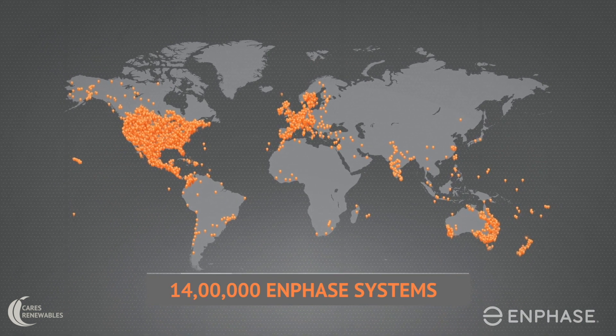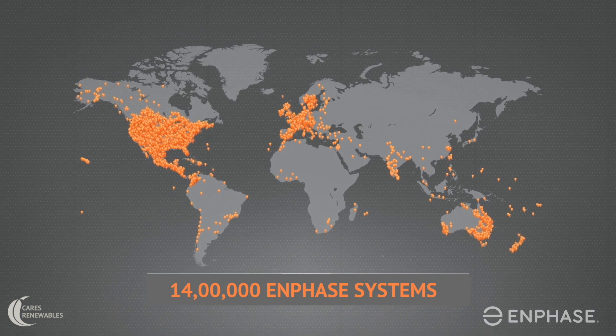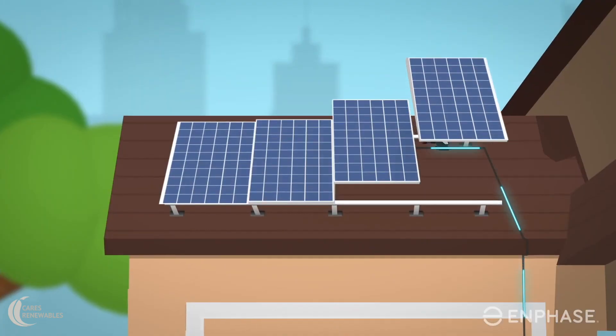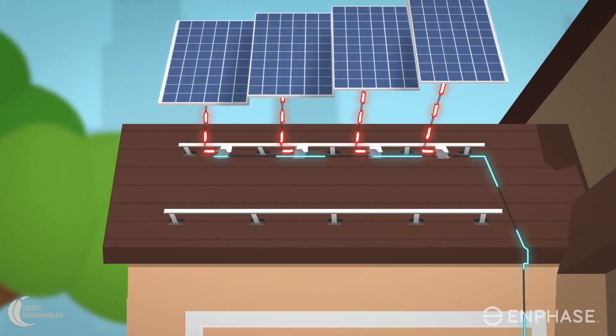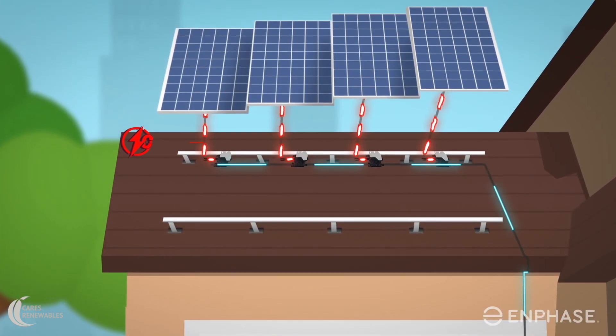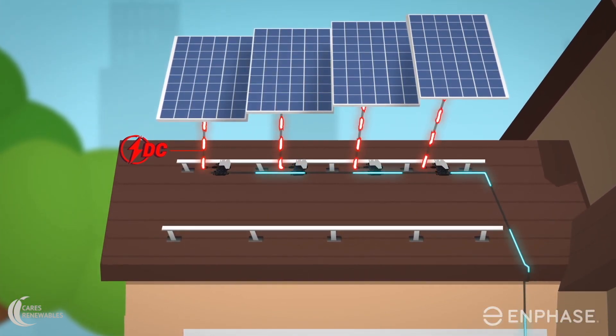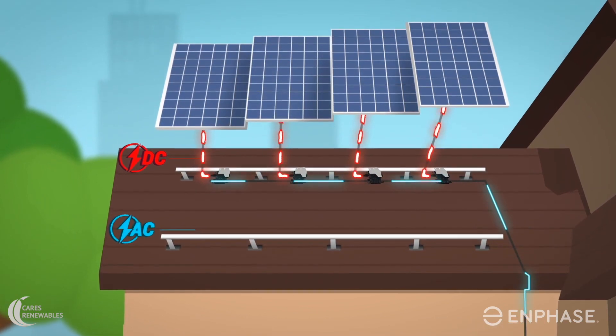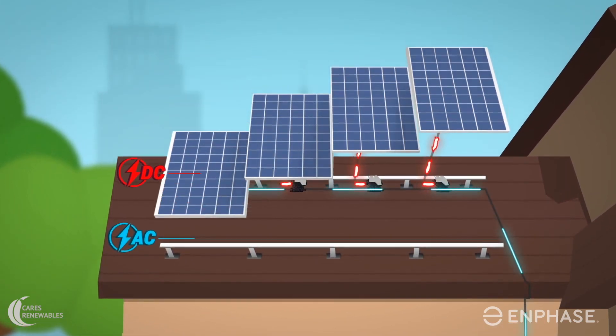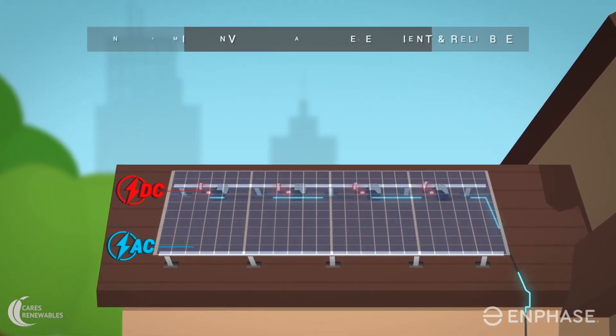Enphase has more than 14 LAC systems installed across the globe. In Enphase microinverter system, a miniaturized inverter is installed under each solar module. The DC power produced by solar modules is then converted to AC at a solar module level.